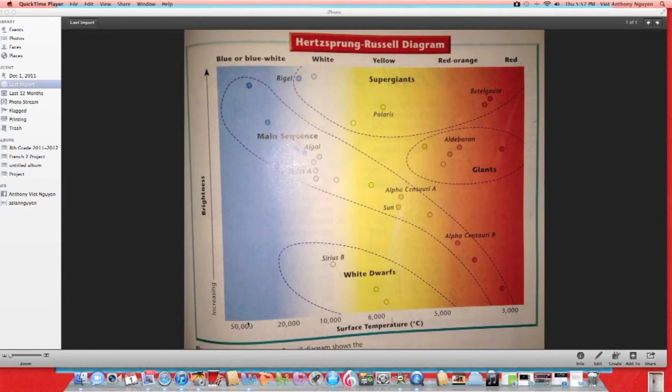Now let's explore the X and Y axis of this chart. The Y axis is absolute luminosity. It goes from lowest brightness to highest brightness of the star. The X axis goes from highest to lowest surface temperature. Stars can range from 50,000 to 3,000 degrees Celsius.